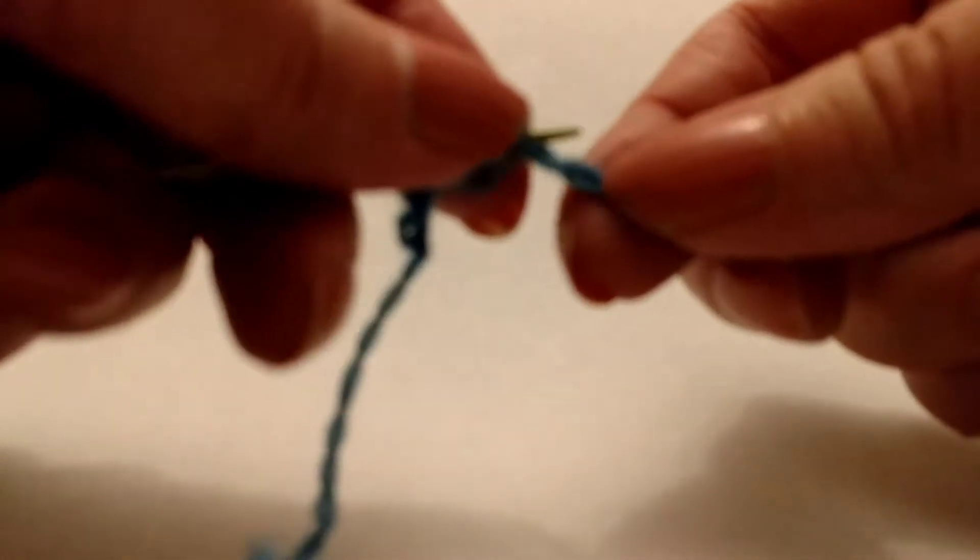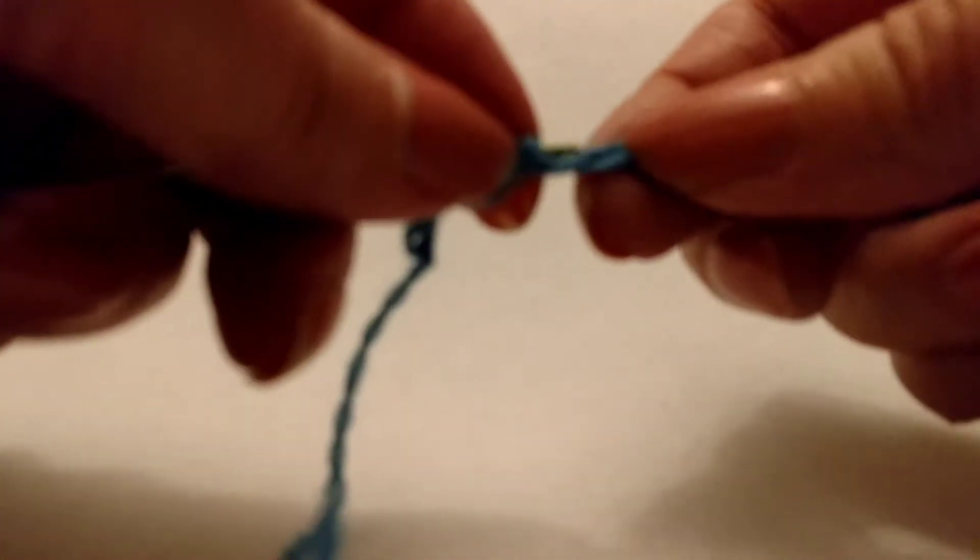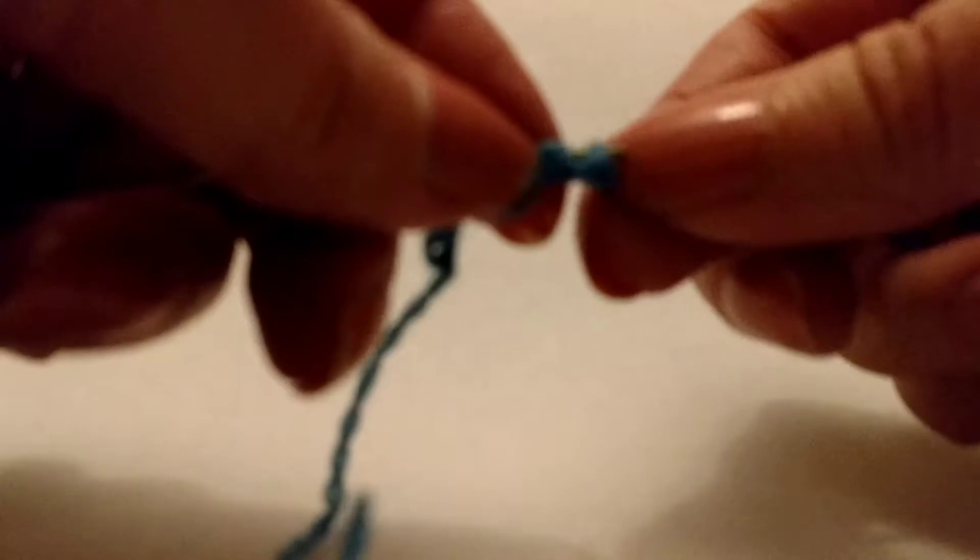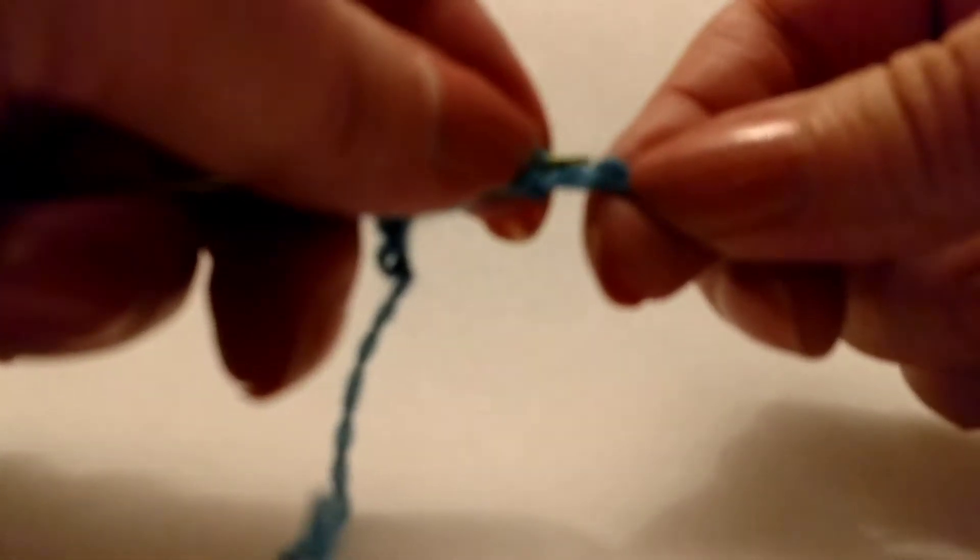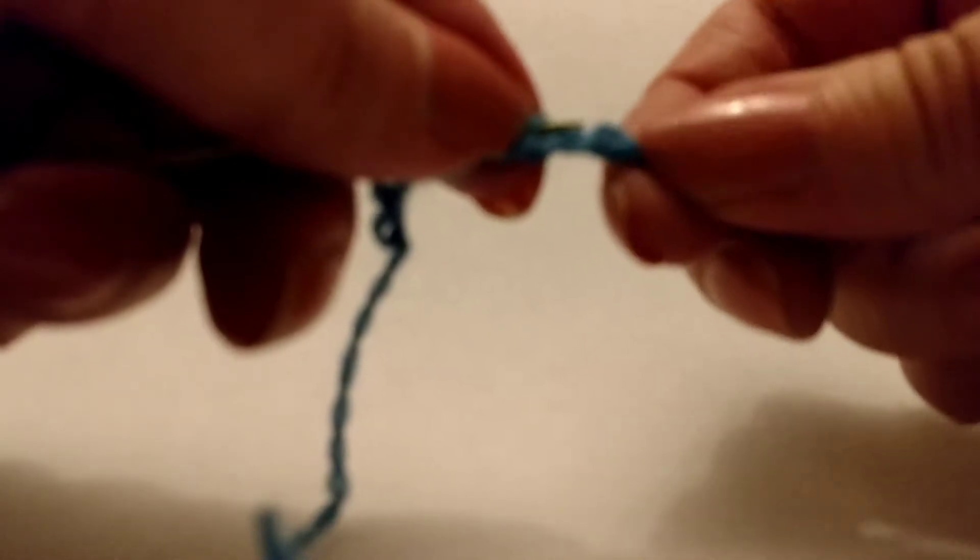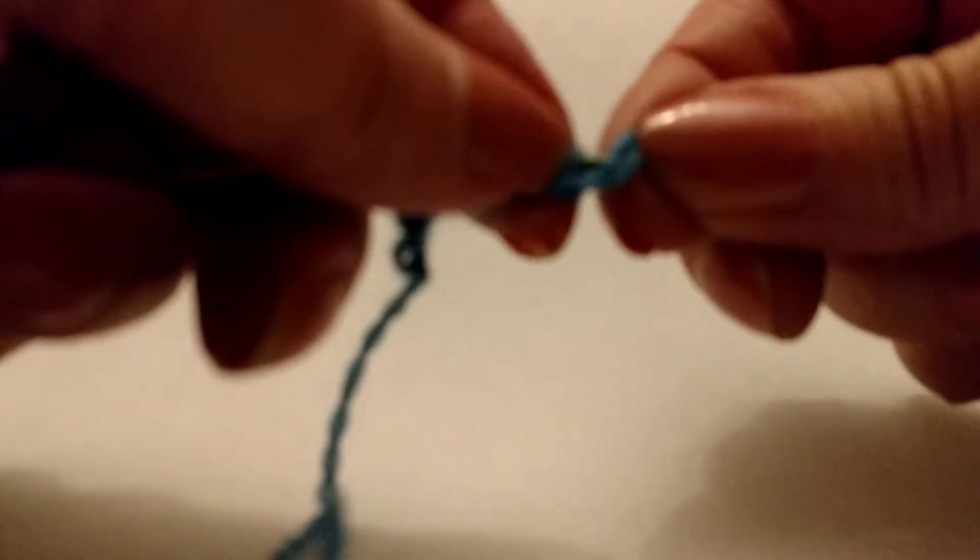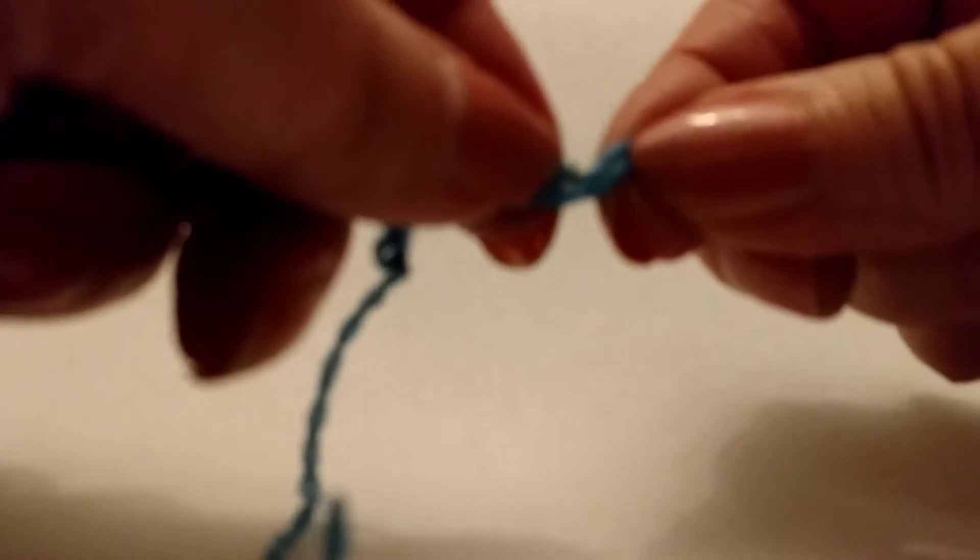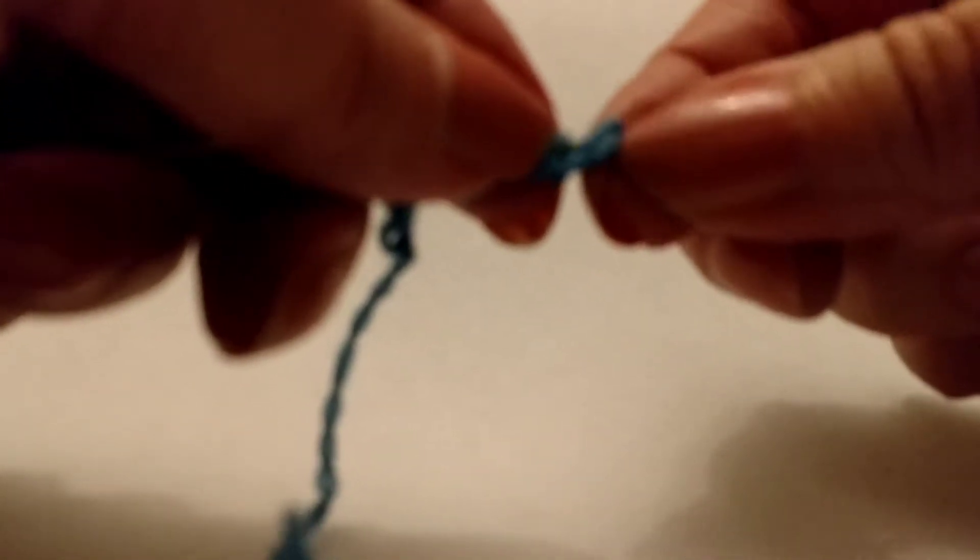I'm pretty sure yours was for 48 stitches. So go ahead and pick up the amount of stitches that you need. You're just going to keep sliding through the bumps on the back of that chain.